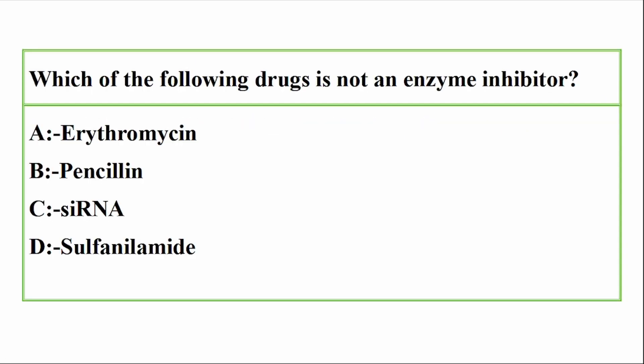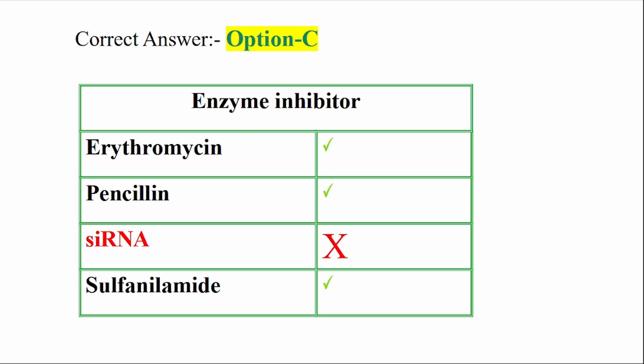Question: Which of the following drugs is NOT an NCM inhibitor? Options: A — Erythromycin, B — Penicillin, C — SiRNA, D — Sulphonamide. Correct answer: Option C — SiRNA. Erythromycin, Penicillin, and Sulphonamide are NCM inhibitors. SiRNA is an RNA inhibitor, not an NCM inhibitor.